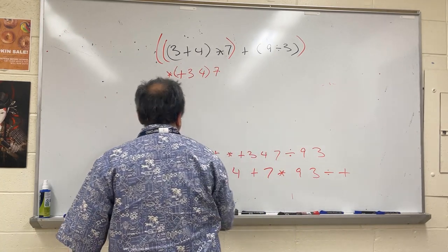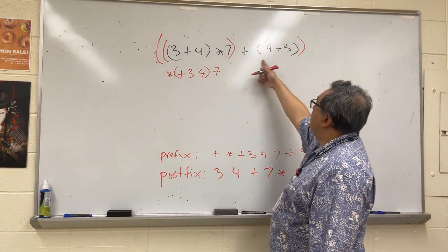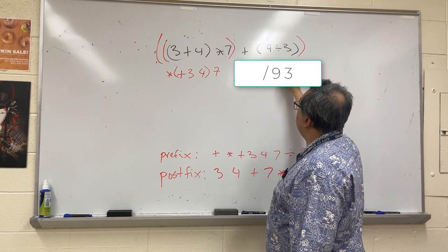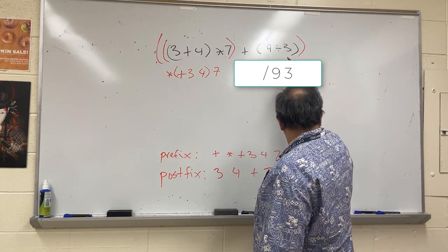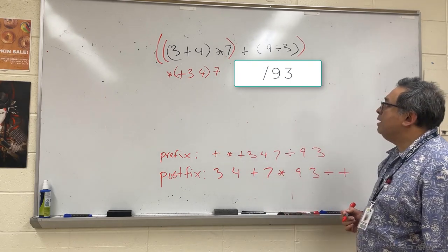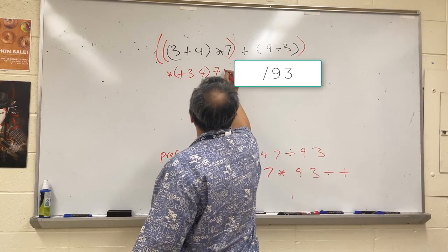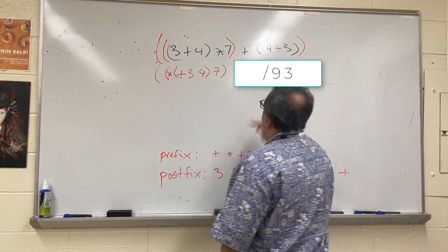And I'm going to do the same thing here. I'm going to take the 3 and the 9, and I'm going to put the division sign in front here like this. And I've still got parentheses going on here, here, here, here, here, here, here, and there.